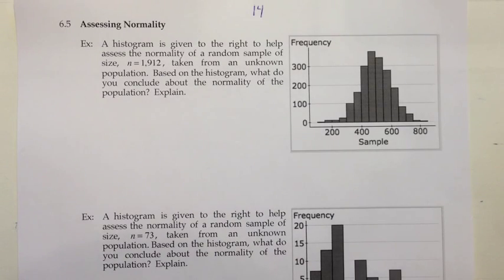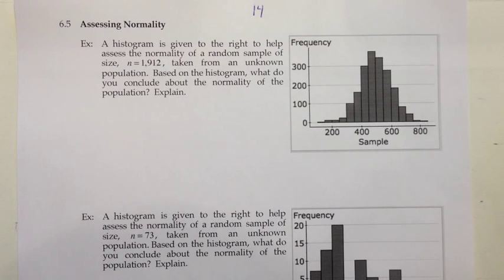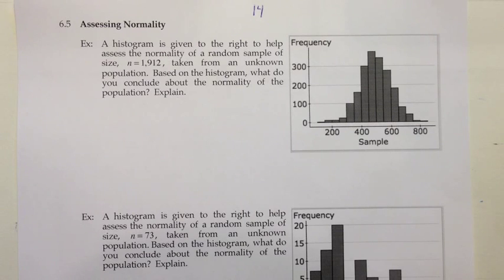Section 6.5: Assessing Normality. In the previous sections of this chapter, we looked at normal distributions and we used area underneath normal curves to find relative frequencies and probabilities for those distributions. In this section, we're going to look at the concept of how do you decide if you are working with a normally distributed population or a normally distributed random variable.